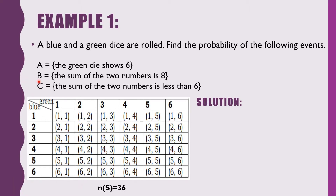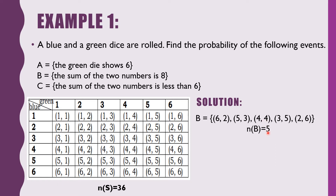Now solving for the probability of Event B, where the sum of two numbers is equal to 8. Looking at the table, the pairs are: (6,2), (5,3), (4,4), (3,5), (2,6). The cardinality of event B is 5. So the probability of event B equals the cardinality of the sum of 8 divided by the cardinality of the sample space: 5 over 36.